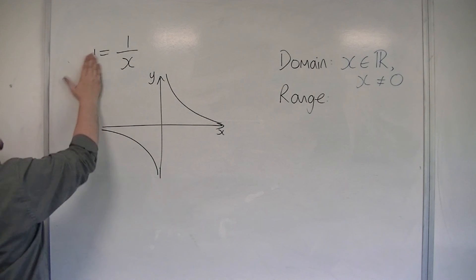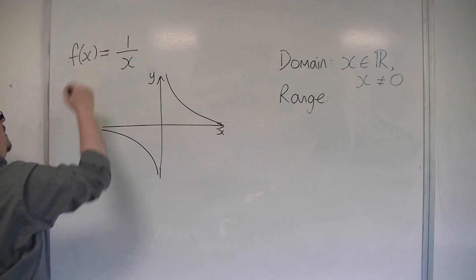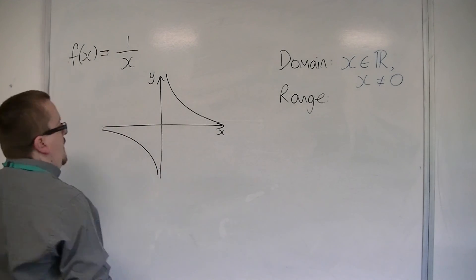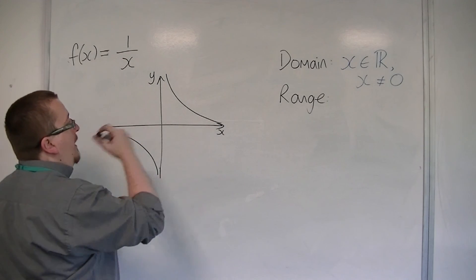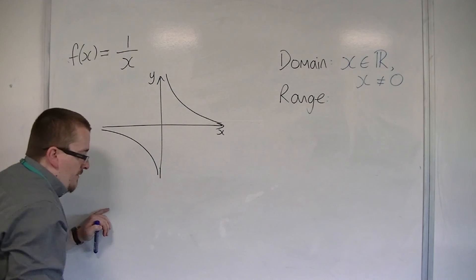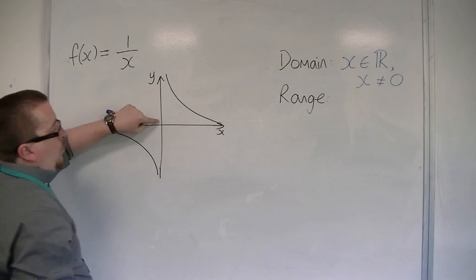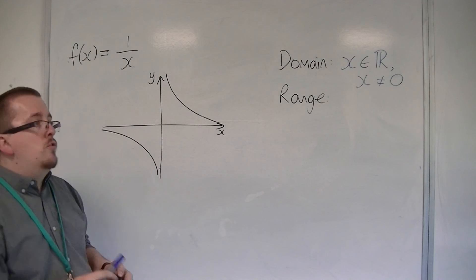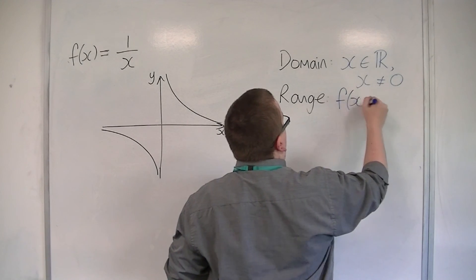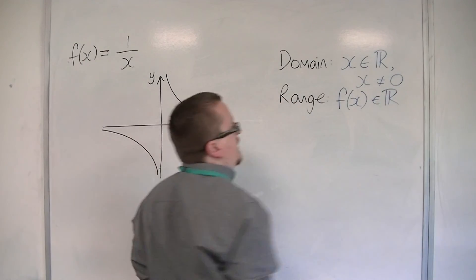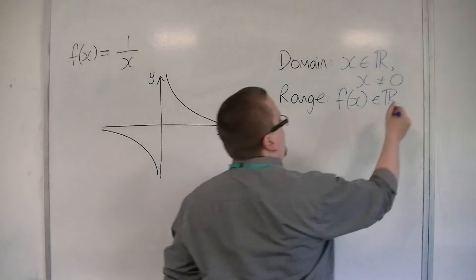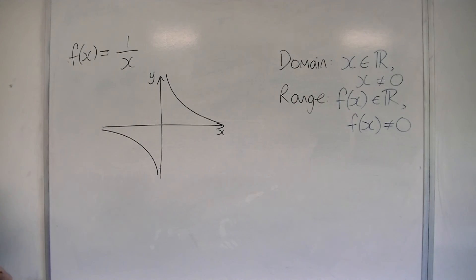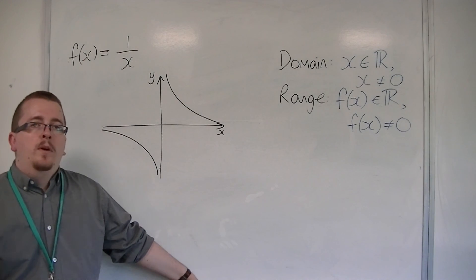Now, let's change that to f of x, just so that we've got an example of f of x. If I'm talking about the range, the range is any output. I can have any y value in that direction, any y value in that direction, except y equals 0, because there is a horizontal asymptote there. So, f of x can be any real number you like, except 0. And that's how domain and range really work. We're going to be picking that up in a later video.